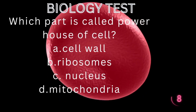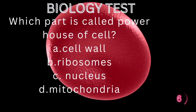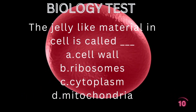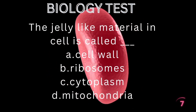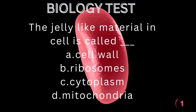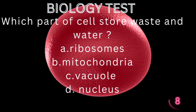...the powerhouse of the cell? Cell wall, ribosomes, nucleus, or mitochondria. The jelly-like material in a cell is called — cell wall, ribosomes, cytoplasm, or mitochondria. Which part of the cell stores waste and water? Ribosomes, mitochondria, vacuole, or nucleus.